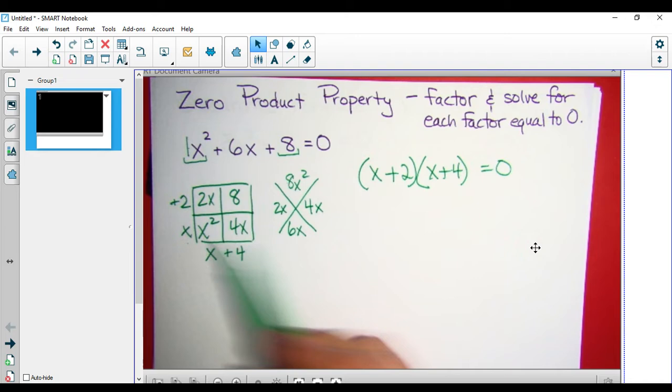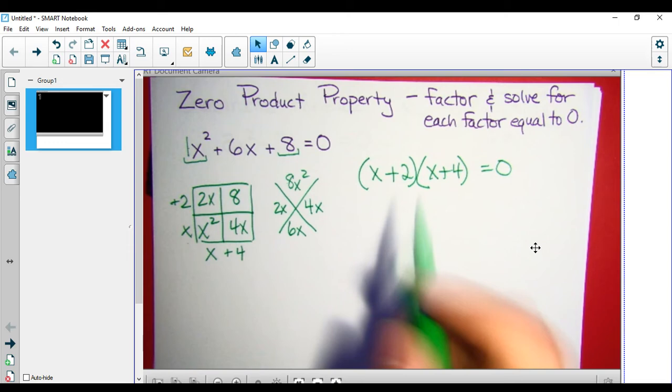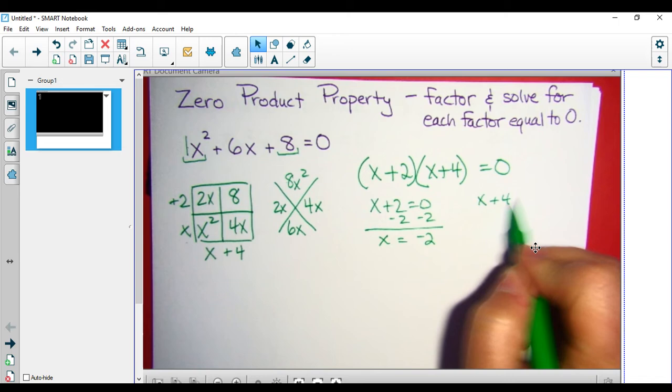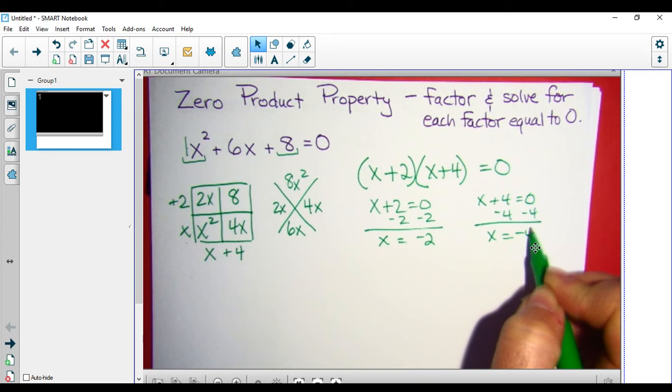If I wasn't able to come up with a combination, then I know I've got to try a different method. Now I'm going to solve this. x plus 2 is 0, so I get x is negative 2. Here, x plus 4 is 0, and I get x is negative 4.